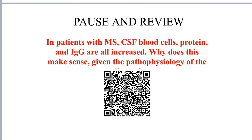Now is a good time to pause and review what you've learned about the diagnosis of multiple sclerosis. Take a moment to consider why CSF blood cells, protein, and IgG are all increased in individuals with MS. Why does this make sense given the pathophysiology of the disease? If you need some additional help answering this question, snap a pic of the QR code for additional resources.